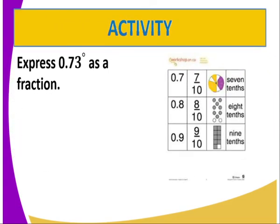Having done that, you are required to complete the following activity: express 0.73 recurring as a fraction. Remember, the dot above the 3 means the 3 is recurring, so the number is read as 0.73 recurring — and that is what you are required to express as a fraction.